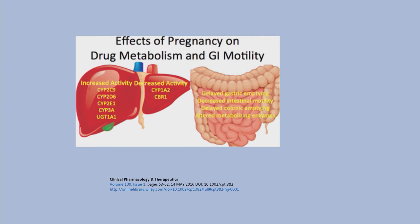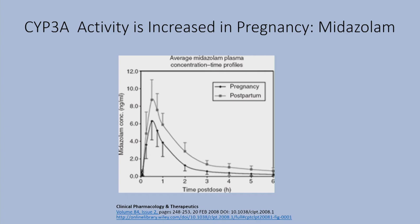This is the effect of pregnancy on drug metabolism and GI motility. There are increased activities in some cytochrome P450 enzymes and some glucuronosyltransferases, but decreased activity in others. There is also typically decreased gastric emptying, primarily because of the mass of the uterus. Using a cocktail approach with small amounts of active drugs, midazolam is a marker for cytochrome P450 3A, and its concentrations are significantly decreased during pregnancy compared to postpartum, indicating that CYP3A activity is significantly increased.